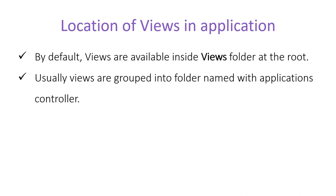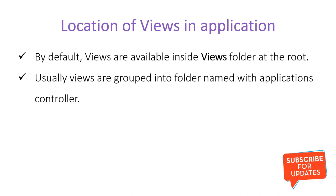If all these things are confusing you right now, don't worry — we will go through all of this in a practical way. Just focus on what I'm telling you: inside one ASP.NET Core MVC application we have lots of views. Managing all those views is not easy, so for better architecture we group all those views into parts and place each group in a particular folder. We will see the folder details in the upcoming slides.